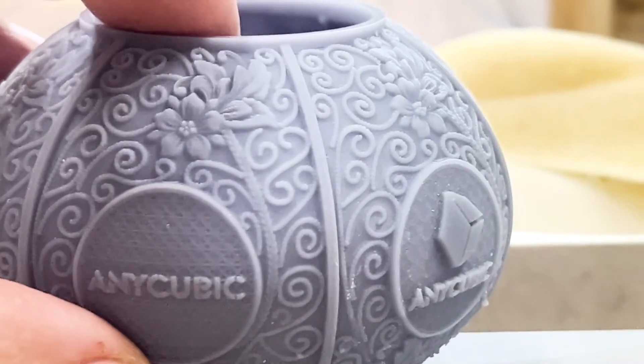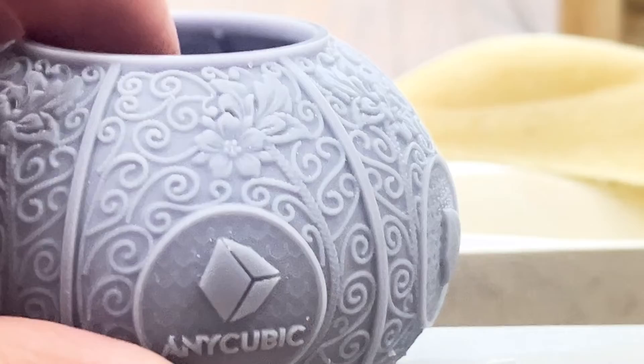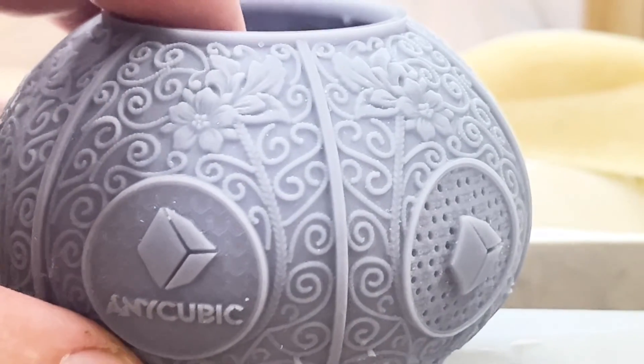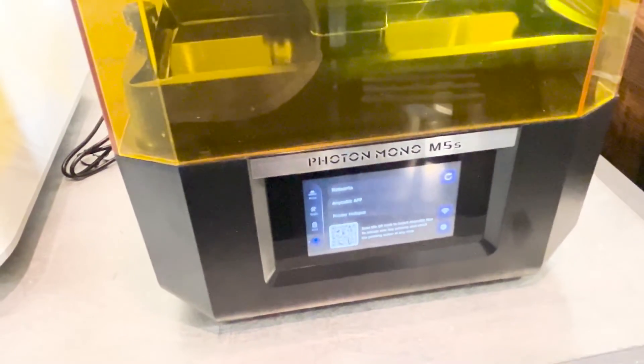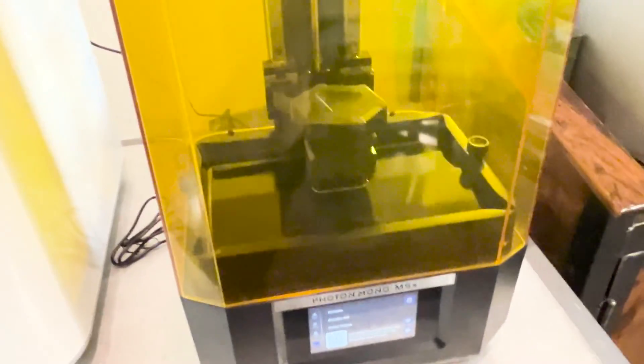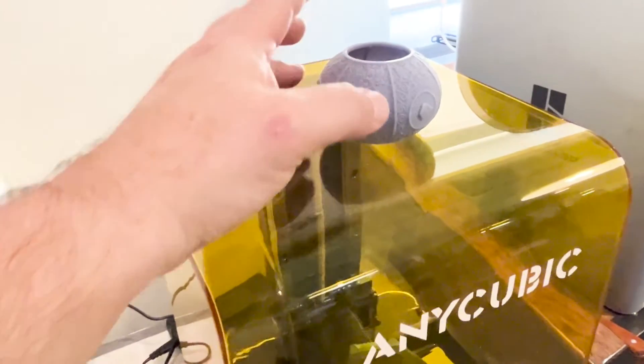And this just came off a brand-new Anycubic resin printer that we just got here at Triumph Makerspace. So this is the new machine that we just printed it on, a Photon Mono M5S, and got this thing just set up yesterday. And that's the print that we were able to pull off of it.